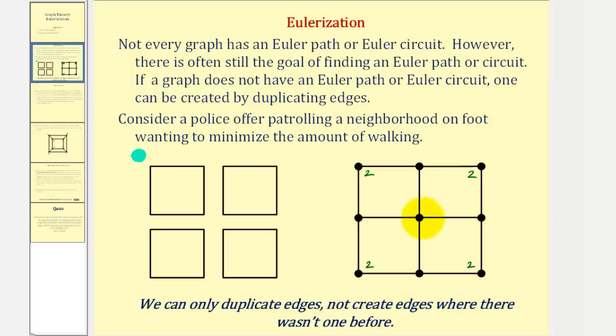This vertex has degree four, but the remaining four vertices have degree three. So because not all the vertices have an even degree, there is no Euler circuit.